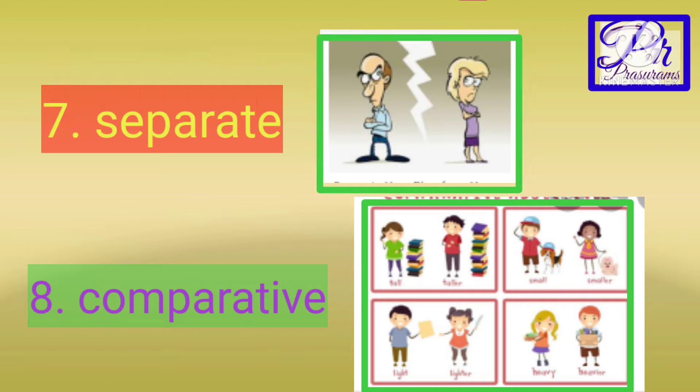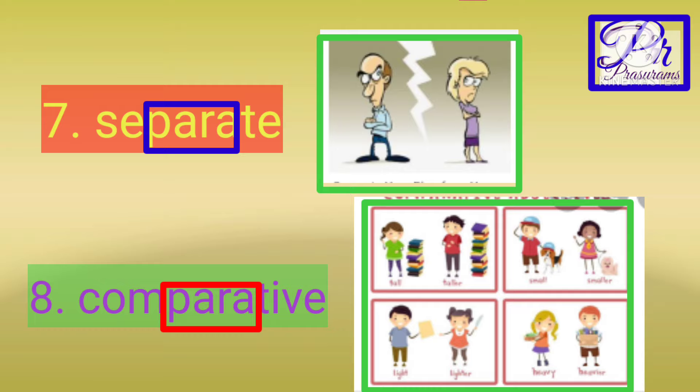Next words: separate and comparative. In both of them, while writing the spelling, we get doubt whether it is p-a-r or p-e-r. Search for the word 'para' — p-a-r-a — inside the word. If you find 'para,' then your spelling is correct.